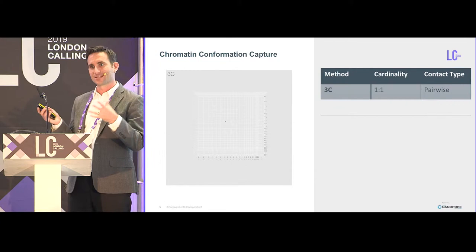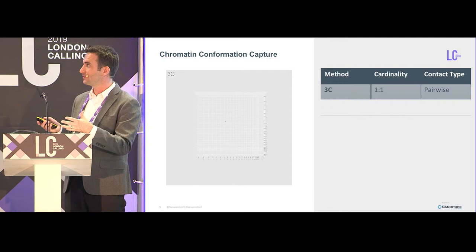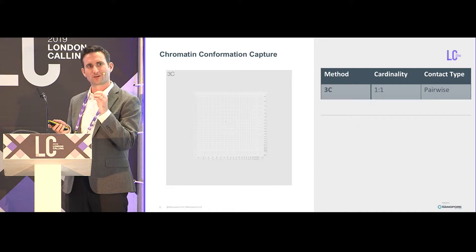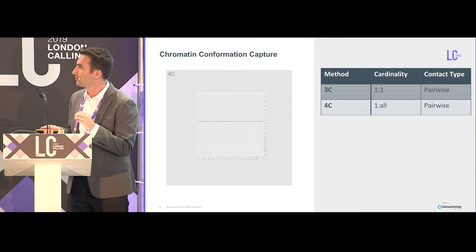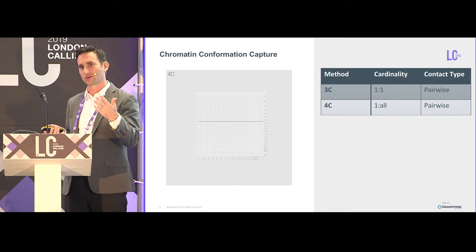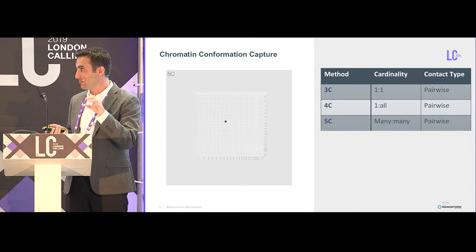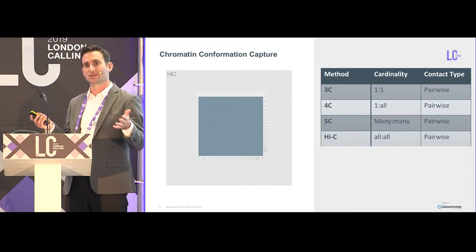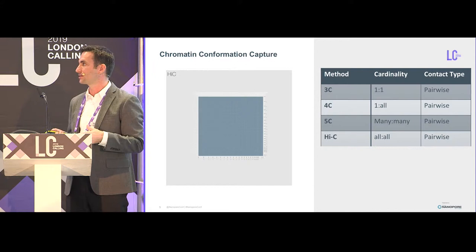Just to give you a sense of the history and where Pore-C fits in — there are many different chromatin capture methods. The original was 3C, which was just pairwise: you look for a particular pair of points in the genome and their spatial orientation. Then came 4C, which was one against all — you look at one region and find all contacting regions. Then 5C, a multiplex many-against-many method. Then Hi-C, which took advantage of the drop in sequencing cost to expand this whole-genome, so you're now in an unbiased way looking at all pairwise contacts in chromatin space.